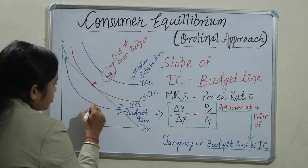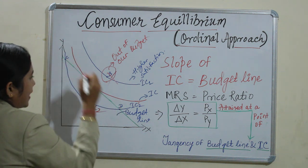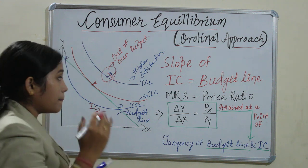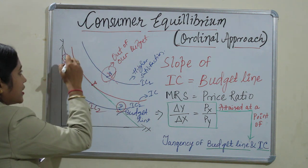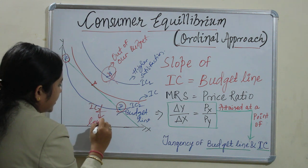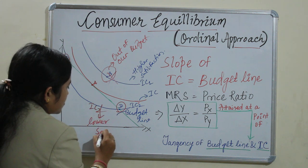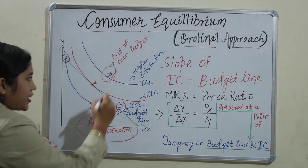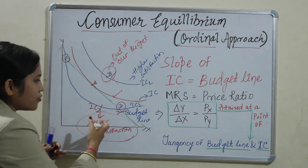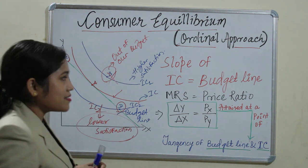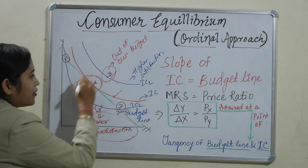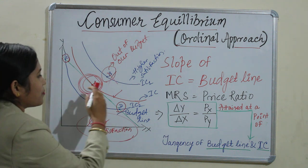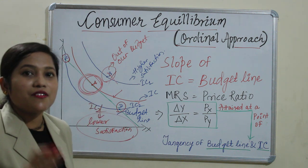Then there is IC2, with points C and D. These points are also on the budget line — we can do the expenditure — but we should not, because IC2 is giving us lower utility, that is, lower satisfaction. At the same price, if we are getting more satisfaction at point A, why would we move to lower satisfaction? That means point A is where the consumer gets maximum satisfaction with minimum budget, which is the point of equilibrium.